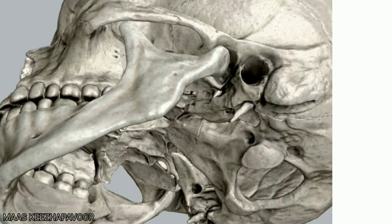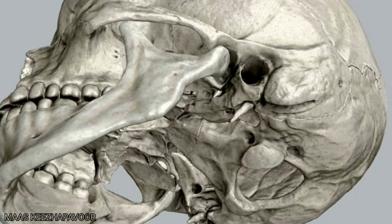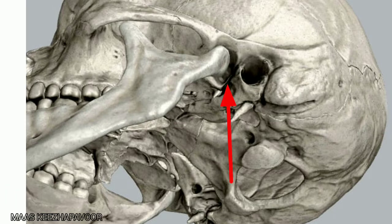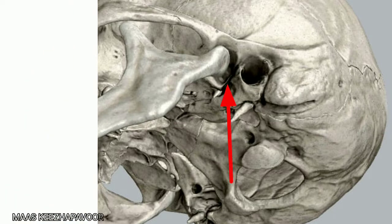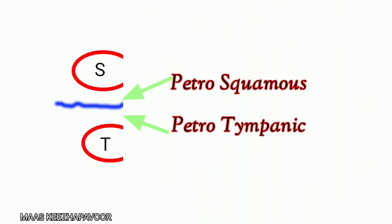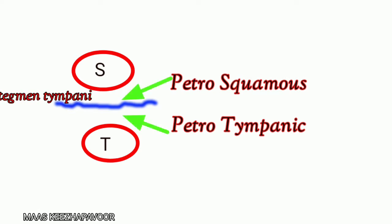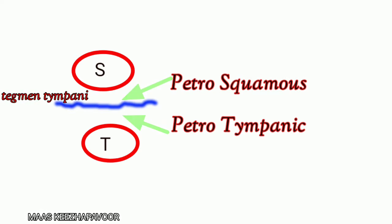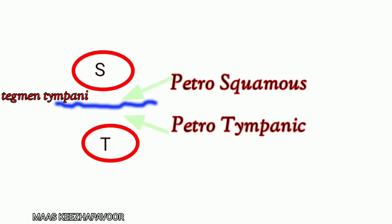The petrotympanic fissure lies in the mandibular fossa of the temporal bone. The squamotympanic fissure is divided into two more fissures by the downturned edge of the tegmen tympani. The fissures are petrosquamous and petrotympanic.